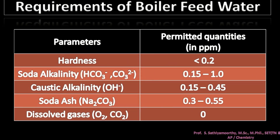Here are the specifications and parameters: hardness must be less than 0.2 ppm, soda and caustic alkalinity must be less than 1 ppm, soda ash must be less than 0.55 ppm, and there should not be any dissolved gases in the boiler feed water. These parameters are very important for the quality of steam as well as the safety of boilers.